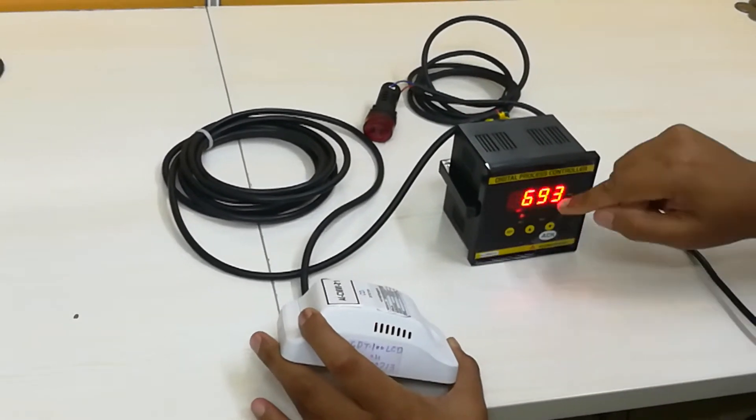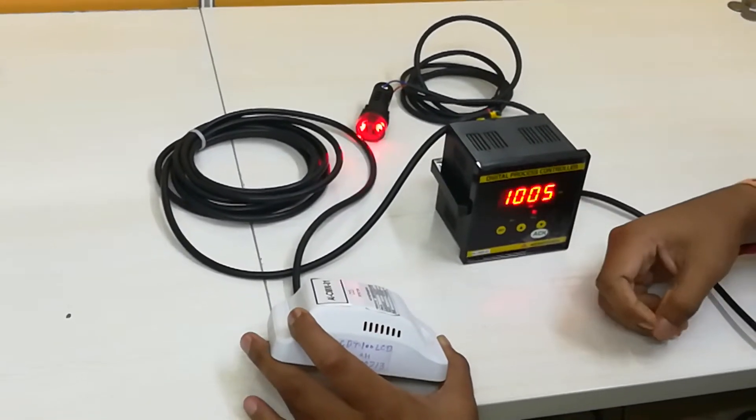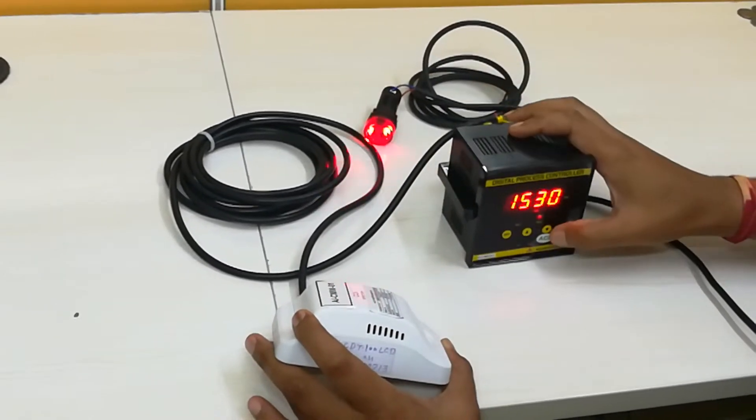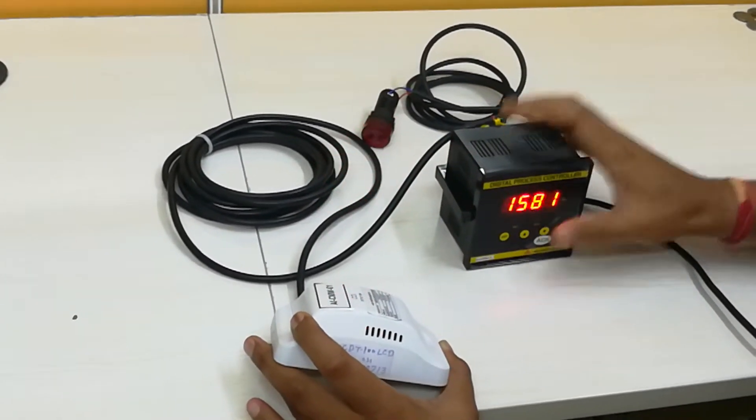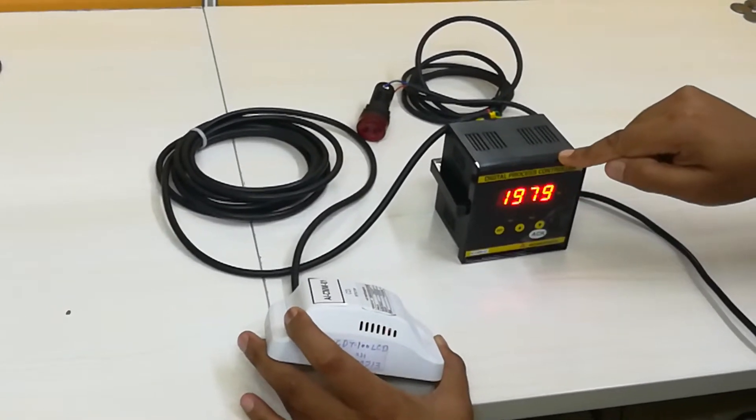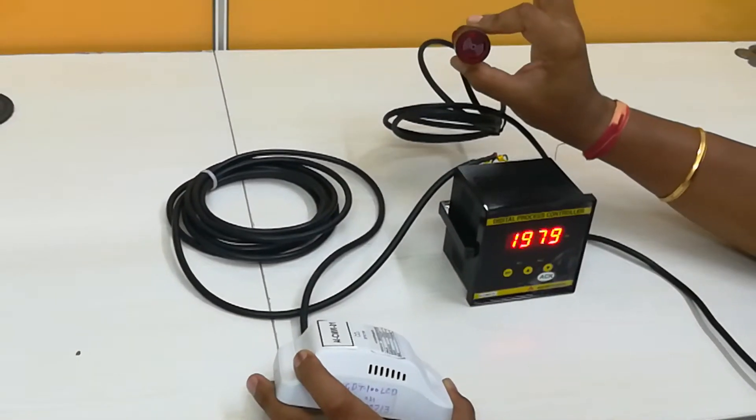It is currently set to 900 ppm. Now we can see that it has crossed. We will just press the acknowledgement key. We have seen that when it crossed 900 ppm it automatically triggered this audio visual buzzer.